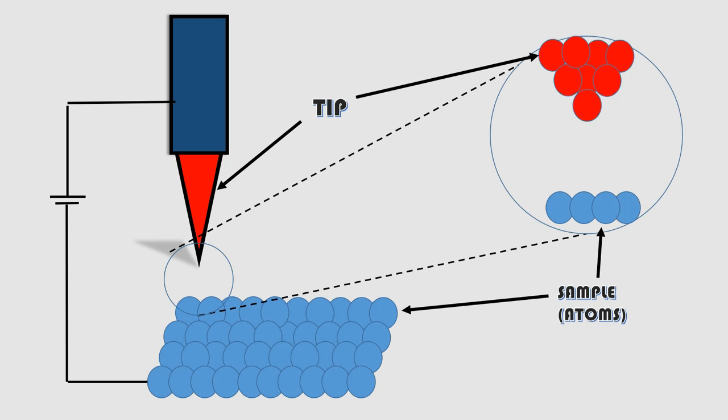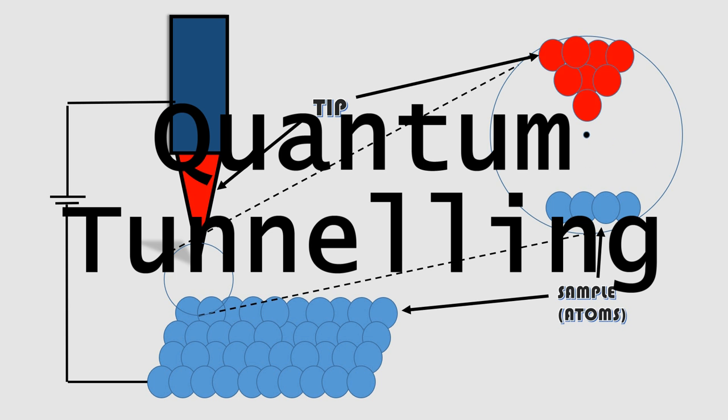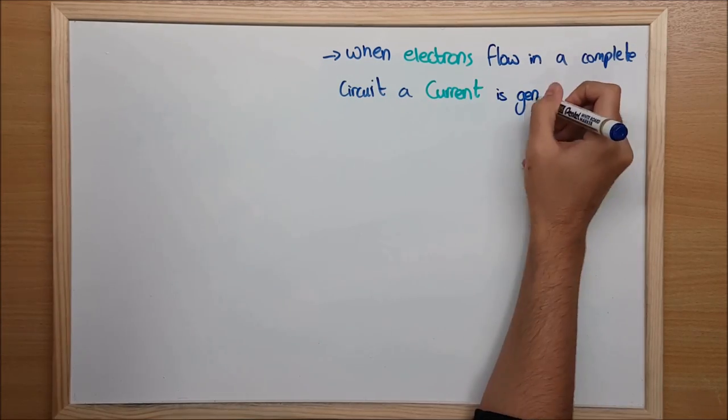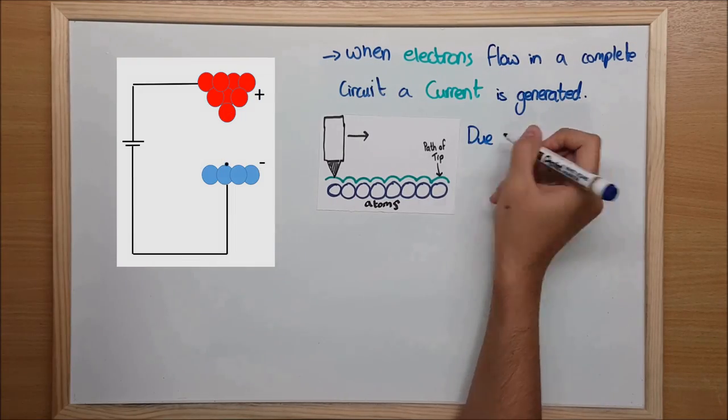Because the distance is so small, as it scans, electrons will occasionally jump from the tip to the specimen. This effect is called quantum tunneling. When electrons flow in a complete circuit, a current is generated. This current is called a tunneling current.